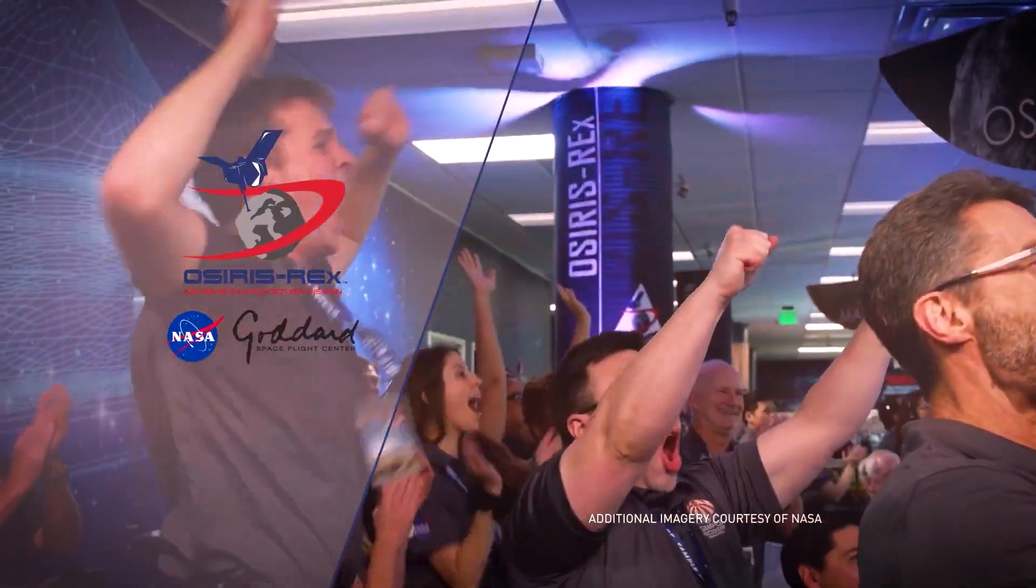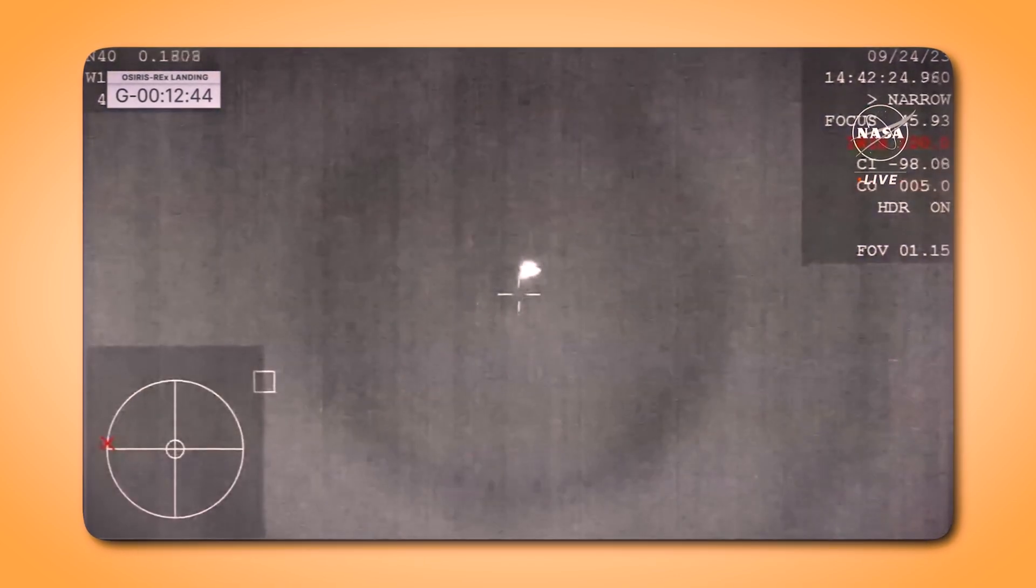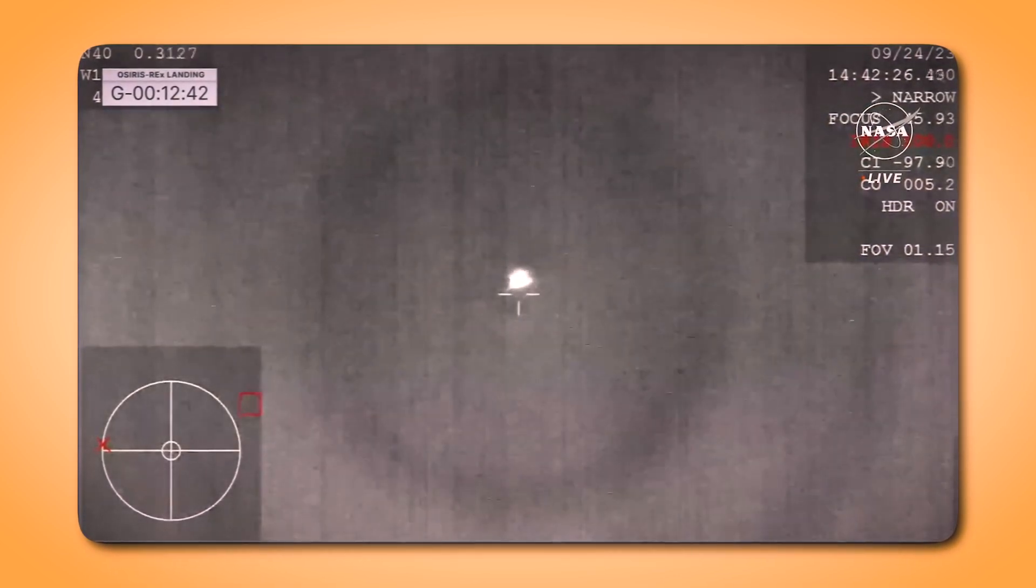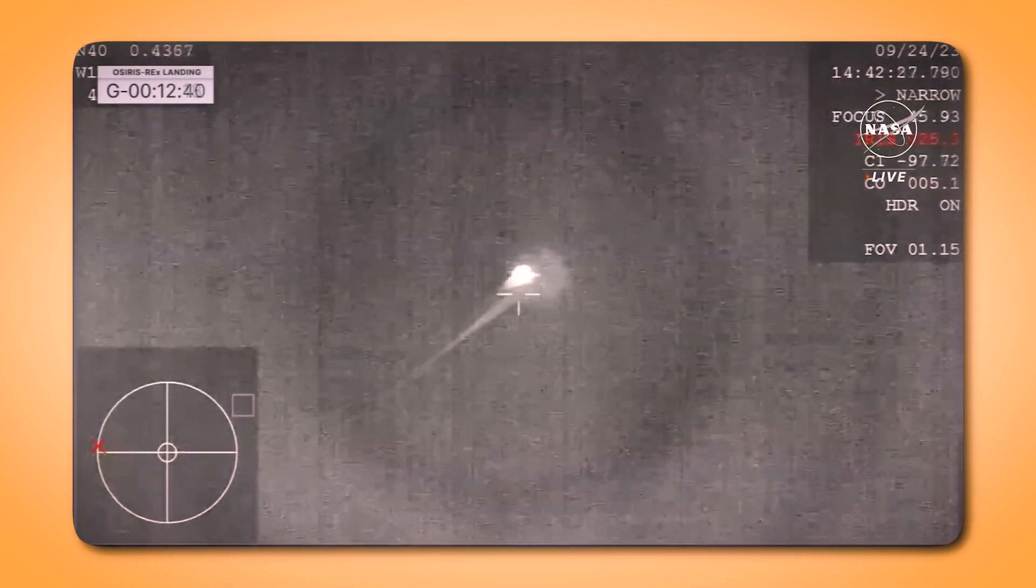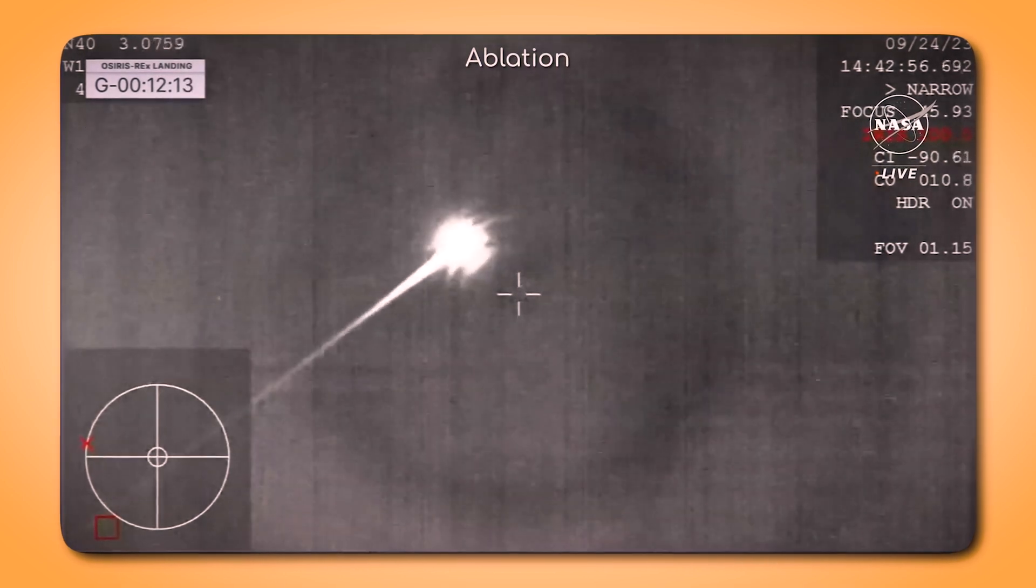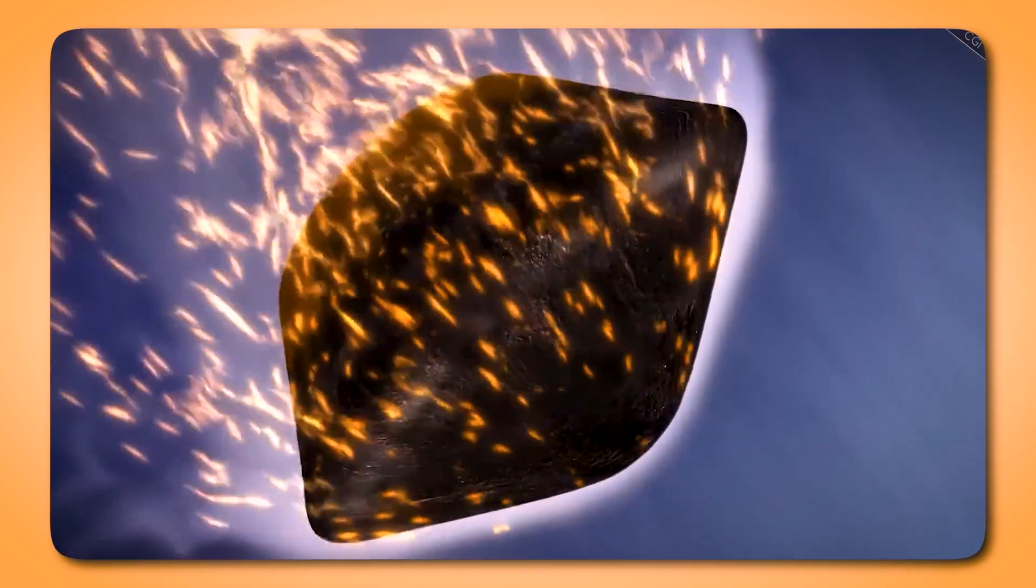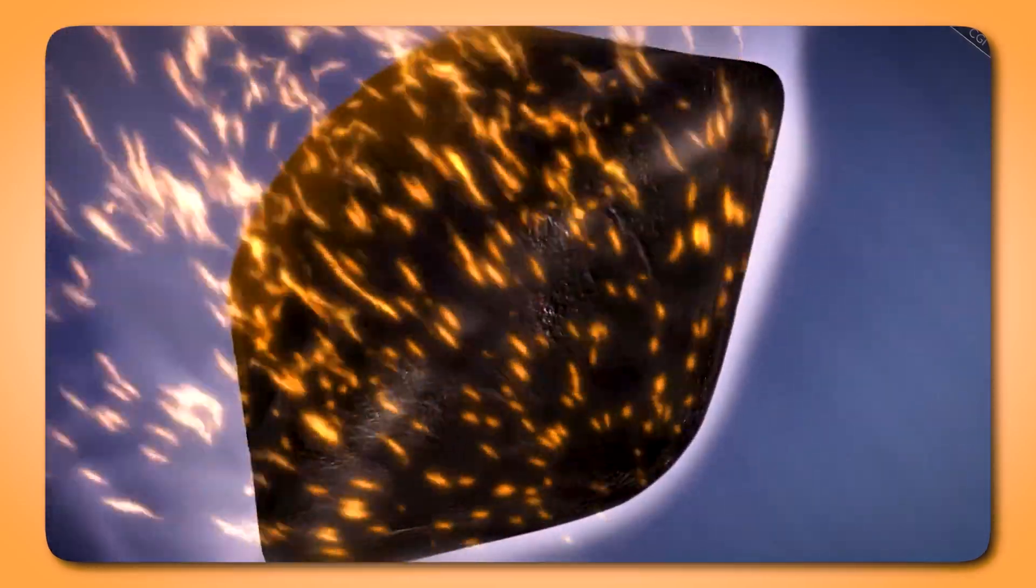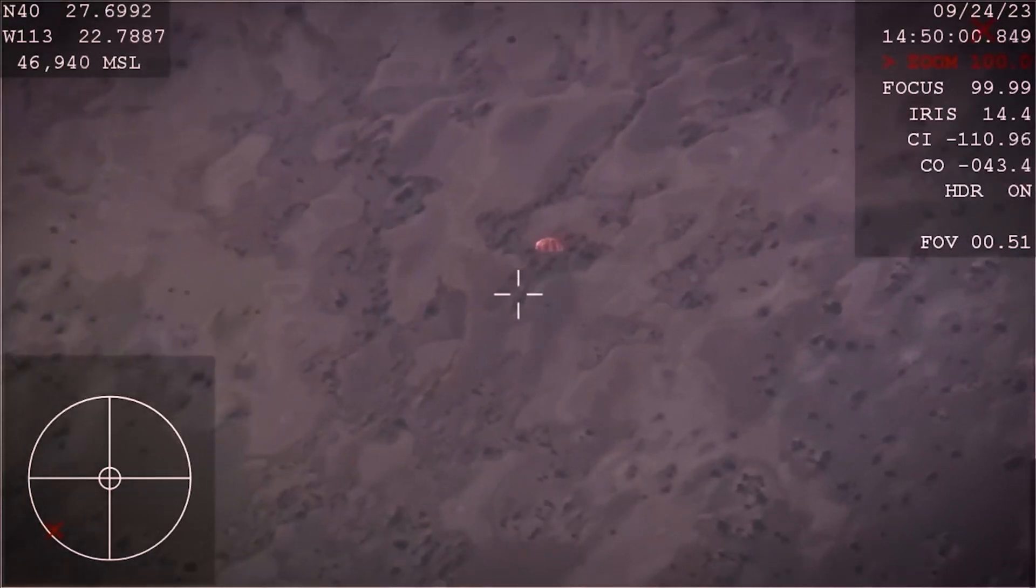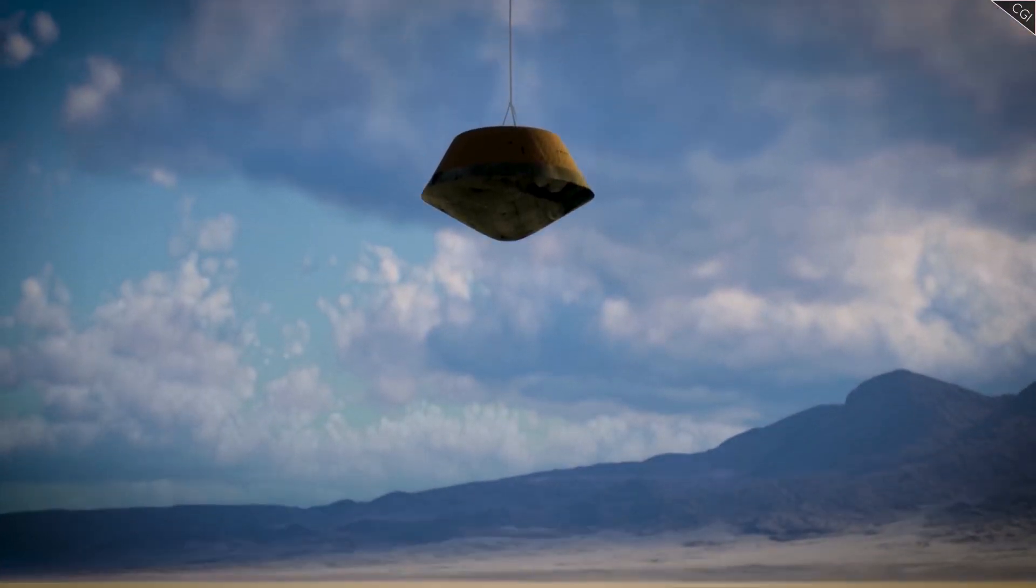Within minutes of re-entry, the capsule slowed enough to deploy its first parachute, stabilizing its descent. At about 16 kilometers above the ground, radar systems locked onto the capsule, tracking it to within 10 meters of its expected landing zone. For the final 1.5 kilometers, a second parachute deployed, gently slowing the capsule to a safe landing speed of approximately 18 kilometers per hour, the pace of a skilled cyclist on flat terrain. The entire journey from atmospheric entry to landing in Utah's rugged desert landscape took just 10 minutes.